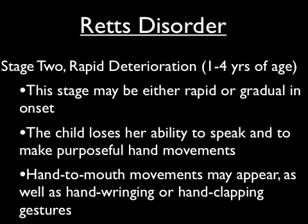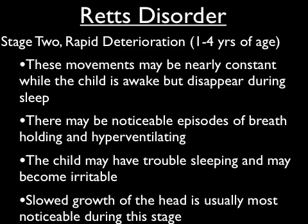In stage two, between years one and four, you'll begin to see rapid deterioration — this is where it significantly starts to change. You'll see things like purposeful hand movements, inability to speak, hand-to-mouth movements. The child is in a blank stare — they're awake but not there, and there's really nothing you can do to pull them in. They're focused out into another world, which is one of the first diagnostics thought to be schizophrenia, but it actually wasn't. You may also notice episodes of breath-holding, hyperventilation, and trouble sleeping. They become very irritable.